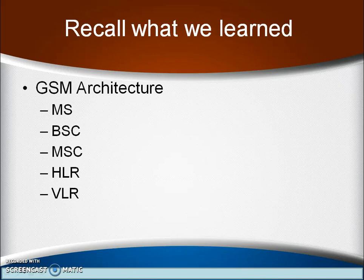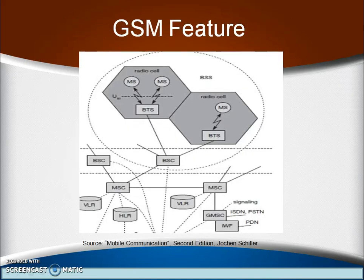We already covered the GSM architecture and its functional units. We already seen the mobile station, base station switching center, mobile service switching center, home location register and visitor location register — these functional units and their position in the GSM architecture's functional unit block diagram. This diagram I studied from the mobile communication book of John Schiller.